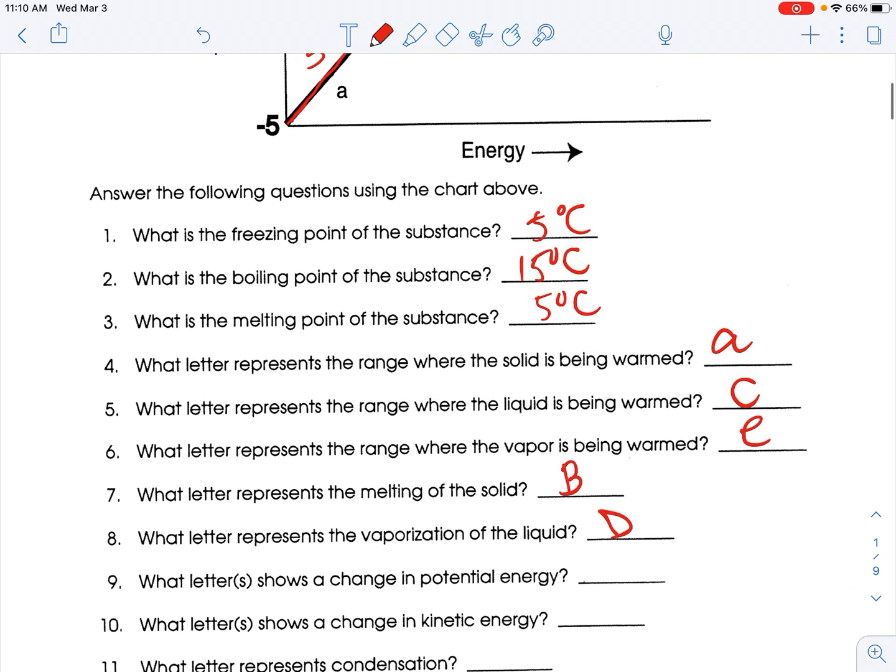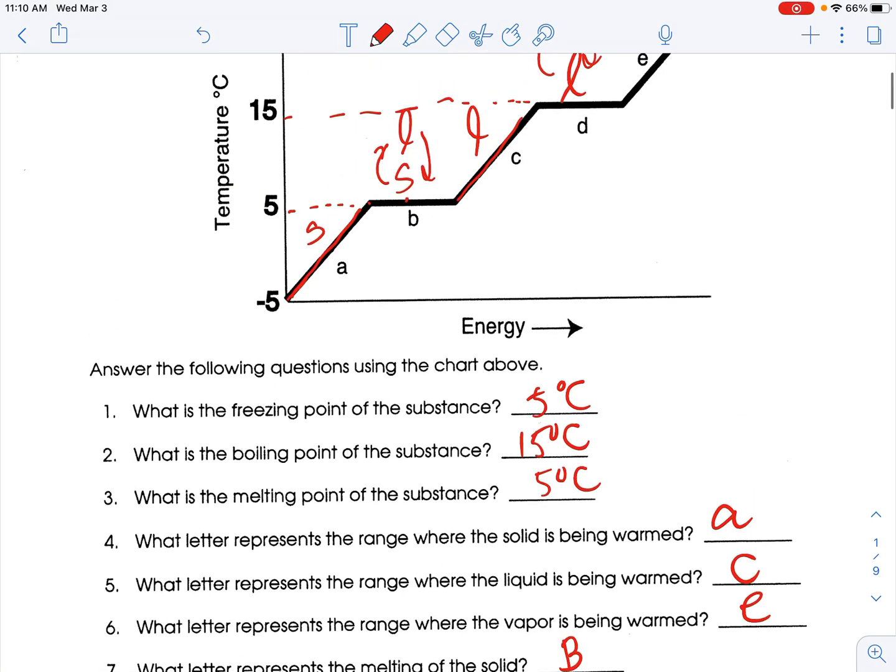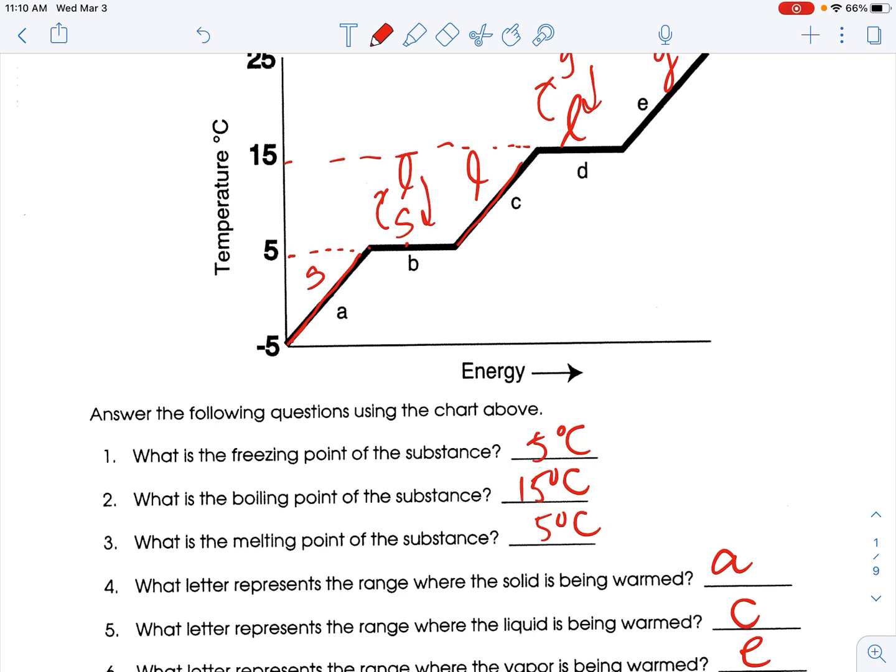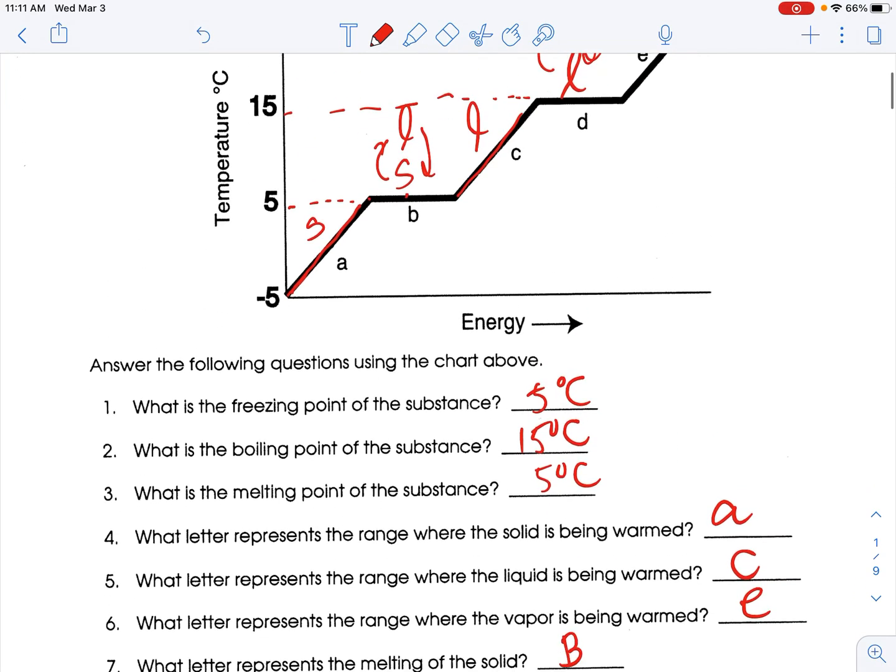What letter or letters show a change in potential energy? Potential energy is when the graph increases, but the temperature or the average kinetic energy is not going to change. So that's going to be the flat lines that increase, which is B and D.